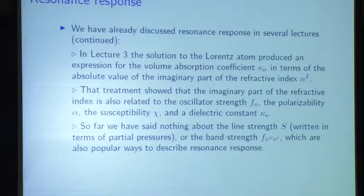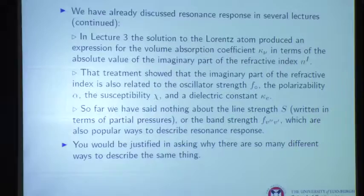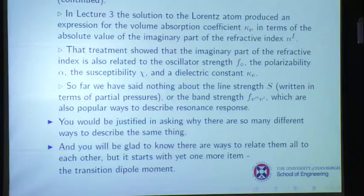We haven't yet discussed the line strength capital S, usually written in terms of partial pressure, or the band strength. You'd be justified in asking why there are so many ways to describe the same thing — it's because many different communities use spectroscopy: astrophysicists studying stellar emission, chemists, material scientists, physicists. They used to be separated from each other and had their own jargon. Now there's a proliferation of ways to describe the same thing. The good news is there are ways to relate all these to each other without a problem — they aren't different, just convertible.